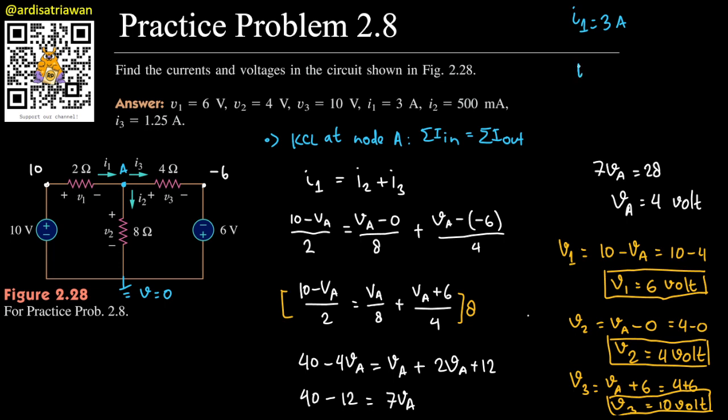And i2 is V2 divided by 8, but V2 is 4, so 4 divided by 8 is 1/2 or 0.5 amperes, or 500 milliamperes if you want to be more readable.